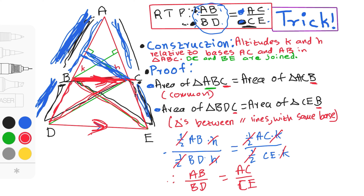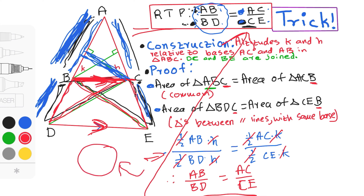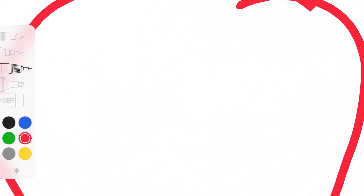That's all, guys. Remember the flow: first, construct altitudes K and H, and join BE and DC. Then say triangle ABC equals triangle ACB, and triangle BDC equals triangle CEB. Then go straight to the RTP — put the halves before AB, BD, AC, CE — put H on one side and K on the other based on where the altitudes are. Then cancel them. Then say 'therefore' and rewrite the RTP. That's the complete flow. Don't forget to subscribe.